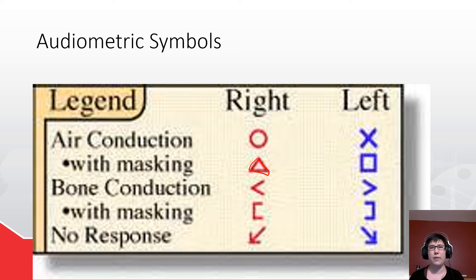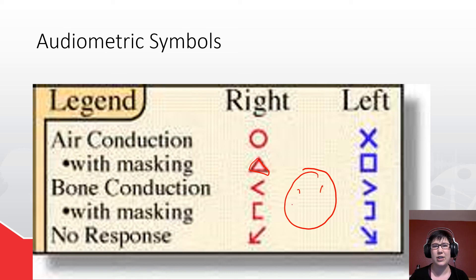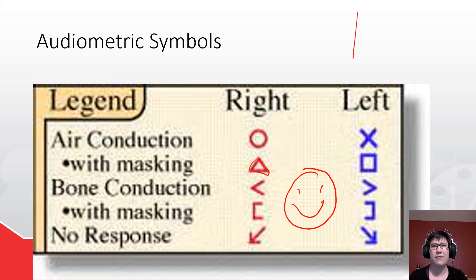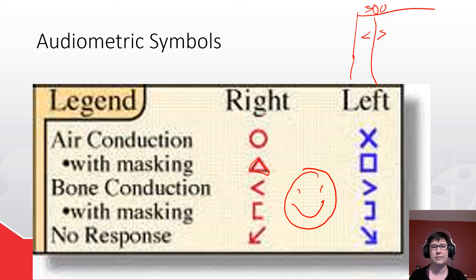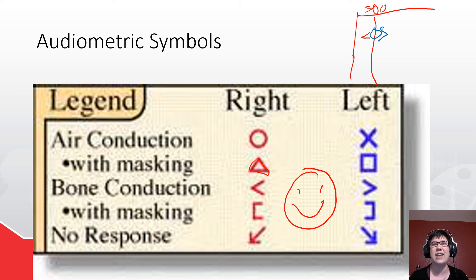For unmasked or masked bone conduction, think of them as ears — you draw a face looking at you. The one on your left is the right symbol. It's important to remember that face goes in the middle, because if you have an audiogram and you want to draw the symbol, you need to have it on opposite sides. Picture that face in the middle with ears on either side.